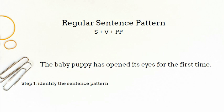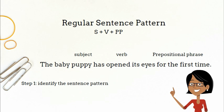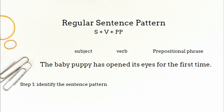The baby puppy has opened its eyes for the first time. The first step is to identify the sentence pattern. If the subject comes before the verb, then it follows the normal sentence pattern, S plus V plus PP.